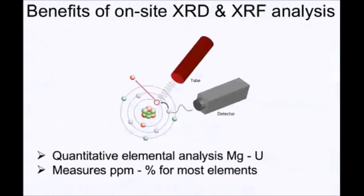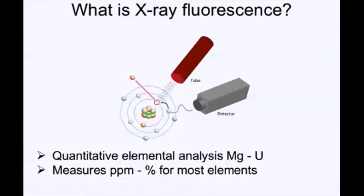So what is X-ray fluorescence? Very simply put, X-ray fluorescence uses an excitation source to excite electrons within an atom. This excitation ejects an electron from its orbital, and there is a transition from the next orbital. This transition releases an amount of energy that is directly proportional to the amount of that element within your sample.